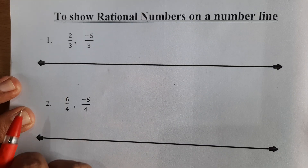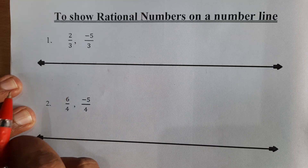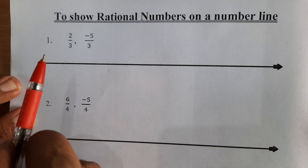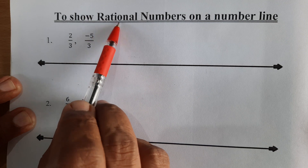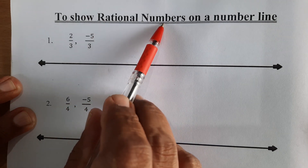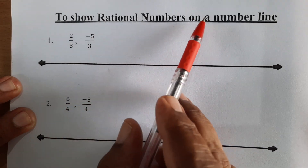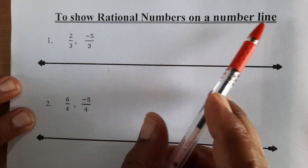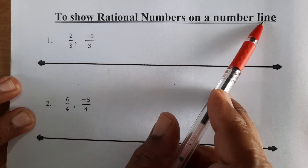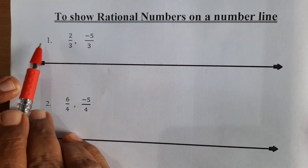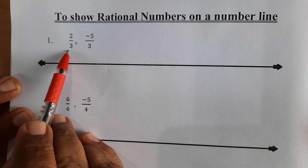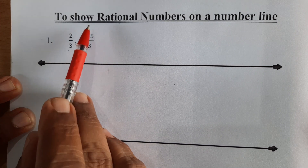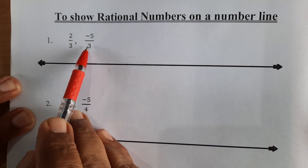Hello students! Today we learn how to show rational numbers on a number line. For example, 2 upon 3 and negative 5 upon 3.